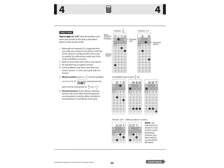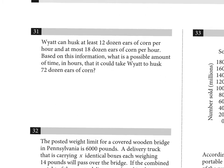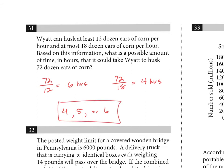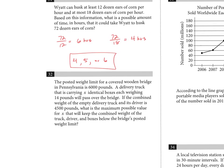Now moving to the grid-in responses — no multiple choice, you have to produce your own answer. Number thirty-one: Wyatt can husk at least 12 dozen and at most 18 dozen ears of corn per hour. What is a possible time (in hours) to husk 72 dozen ears? At 12 dozen per hour: 72 divided by 12 equals 6 hours. At 18 dozen per hour: 72 divided by 18 equals 4 hours. Any value from 4 to 6 hours is acceptable.